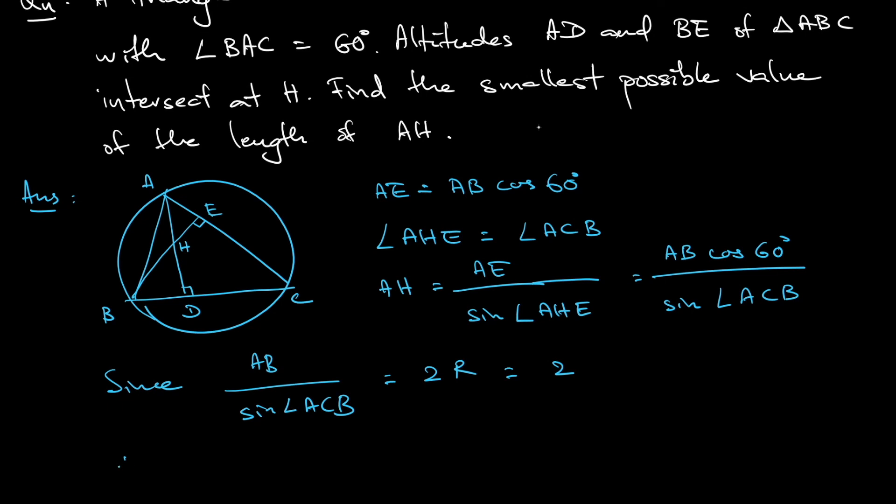So that means that AH is equal to, substitute that in, it's just 2 cosine 60 degrees. And cosine 60 degrees is half. So AH is just 1.